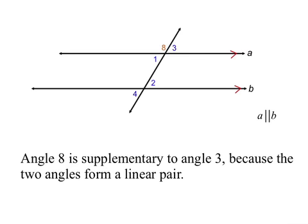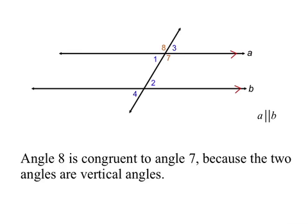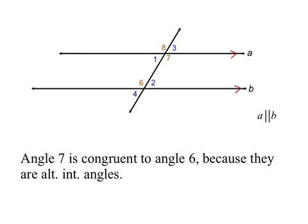Angle 8 is supplementary to angle 3 because those two angles form a linear pair. Angle 7 is congruent to angle 8 because of vertical angles. Angles 7 and 6 are congruent because they're alternate interior angles. Finally, angle 6 is congruent to angle 5 because those two angles are vertical angles.